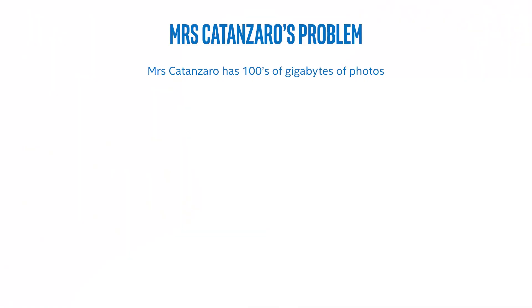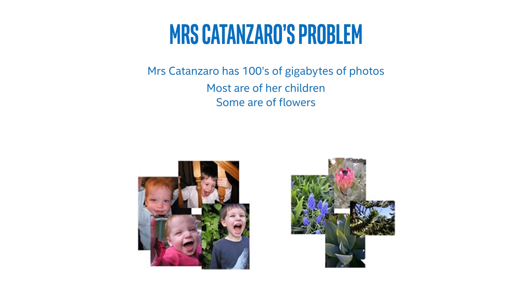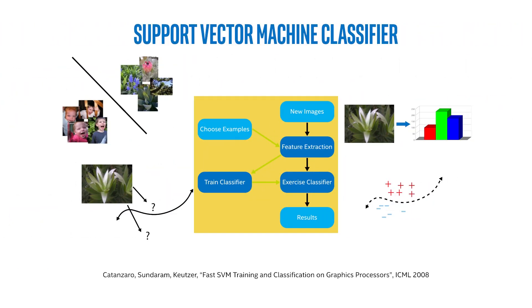So Mrs. Catanzaro has a problem. She has hundreds of gigabytes of photos. Most of them are of her children, some are of flowers. She'd like to be able to find her children without sorting through all the flower photos. Sounds like a job for a support vector machine classifier. In a support vector machine classifier, what we do is we take examples of children, extract their features and train the classifier, and examples of flowers—extract the features and train the classifier. In some sense, we reduce each photo to a vector in n-space, and then we build a fence in n-space, which separates on one side children, and the other side flowers.